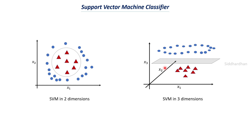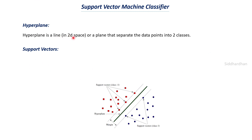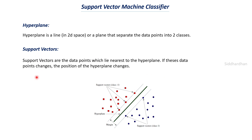To summarize the definitions: a hyperplane is a line in 2D space or a plane in higher-dimensional space that separates data points into two classes. In a two-dimensional space it is a straight line; in a three-dimensional or multi-dimensional space it takes the form of a plane. Support vectors are the data points which lie nearest to the hyperplane. If these data points change position, the position of the hyperplane changes as well. This is one of the main concepts of support vector machine.